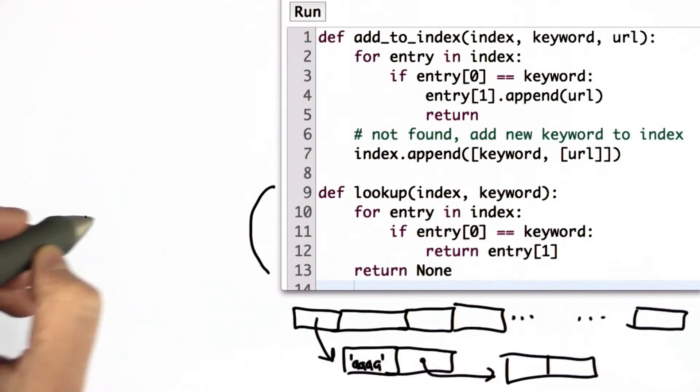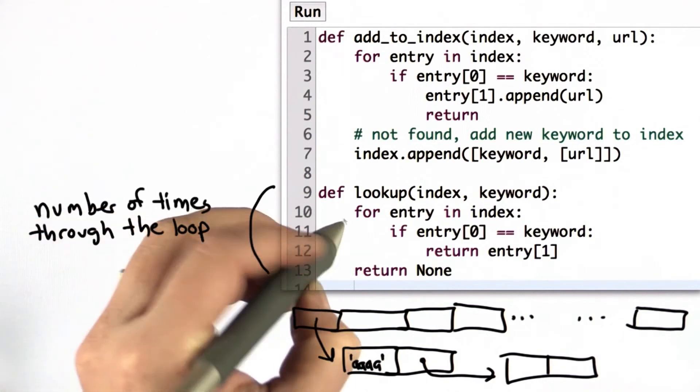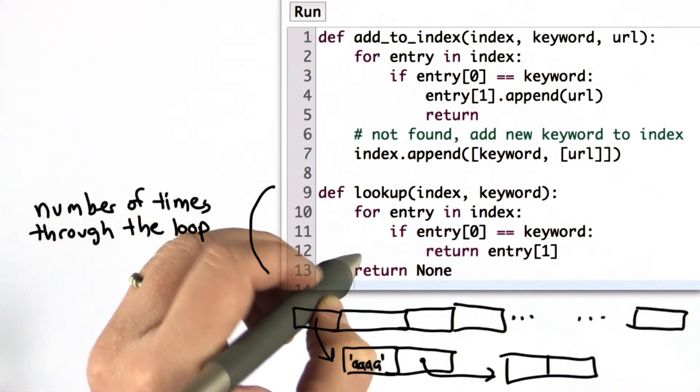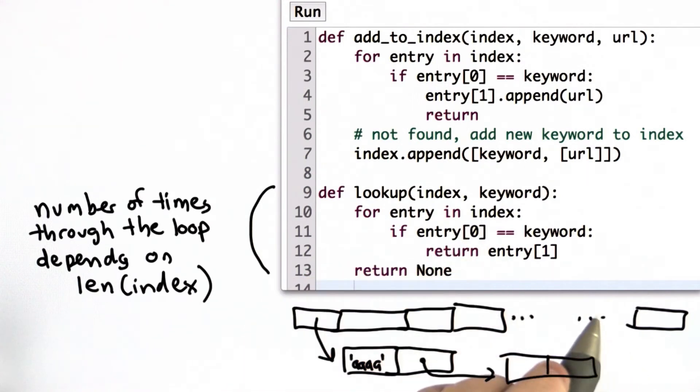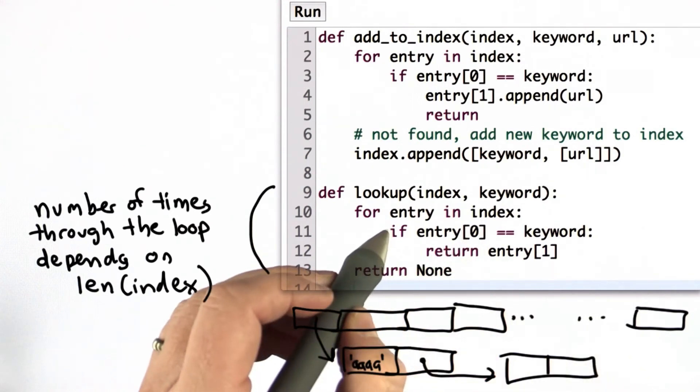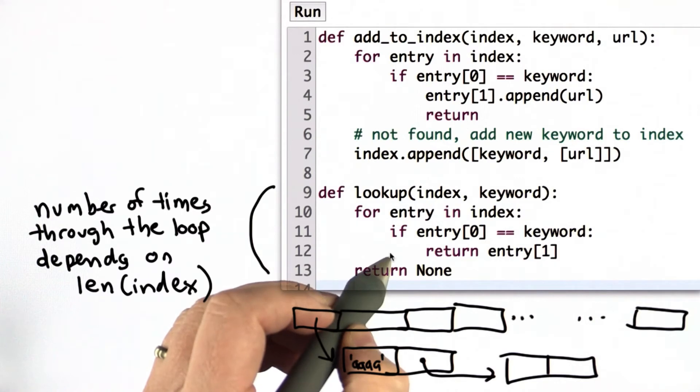And what lookup is doing is going through those entries. The number of times we go through this loop depends on the size of the index. The size of the index is the maximum number of times through that loop. And it also depends on if we find the keyword early, then we're done.